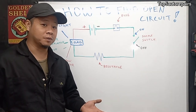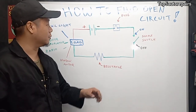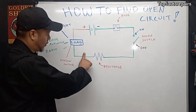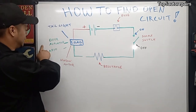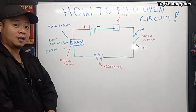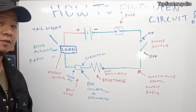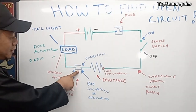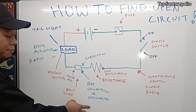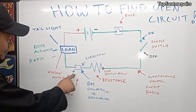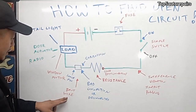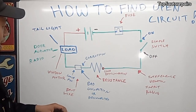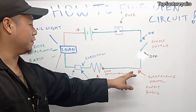There are a lot of factors that can cause an open circuit. Some of the common causes are going to be a blown fuse, a bad switch, a break in a wire somewhere, or one of these accessories going bad. There are also other factors — for example, you can have a loose connection or a bad connection that's not properly connected, a loose pin coming out of the connection, burnt wires, or a buildup of corrosion and rust.